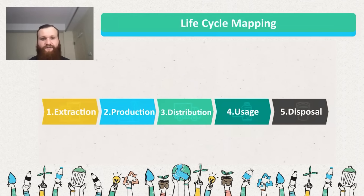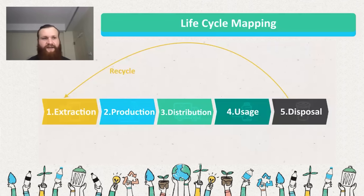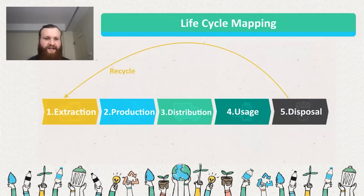The first intervention point is recycling — taking that disposal stage and turning a waste product back into raw materials, often by some reprocessing. If it's glass, it needs to be crushed down back into a sand-like product. If it's plastic, it needs to be heated and separated. This recycling takes away disposal, takes away waste generation, and turns it back into a raw resource.